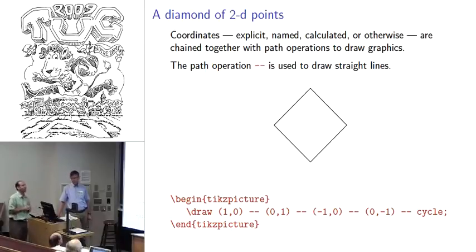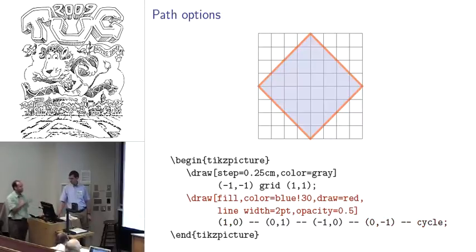Coordinates can be given in lots of different ways - either explicitly, just saying I want to be at position 3,1, or they can be referred to as a named coordinate where you have something you've already given a name, or you can calculate it using some math. When you want to draw your graphics, you chain these coordinates together with a variety of path operations. We're going to look at the path operation that consists of just two hyphens, which represents a straight line. Here we're just drawing this diamond, starting off at position 1,0, going around to the other vertices. Cycle is just a special coordinate which refers to wherever you began this particular path at.